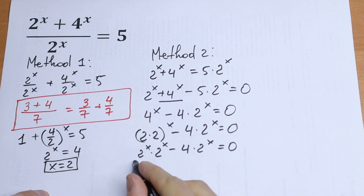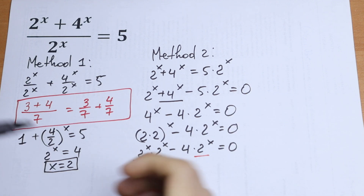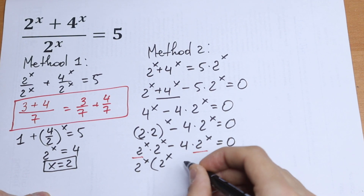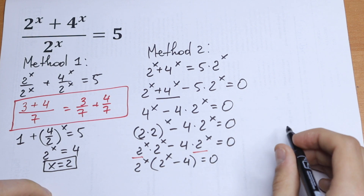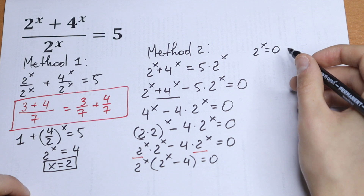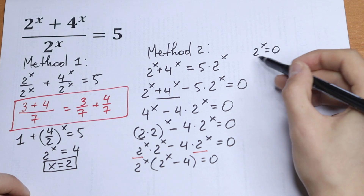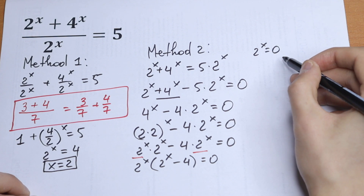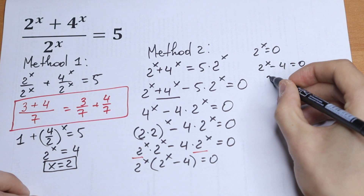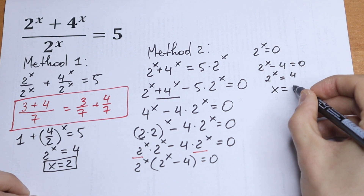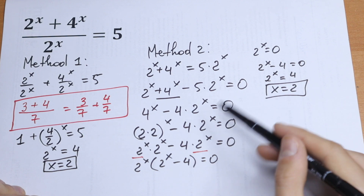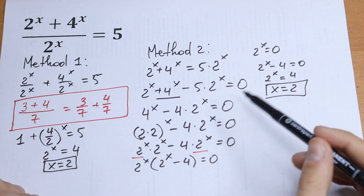We have 2 to the power x appearing twice, so we factor it out as a common factor. We get 2 to the power x times (2 to the power x minus 4) equal to 0. Since it's a product, the first case — 2 to the power x equal to 0 — has no solution, because 2 to the power x can never be zero. The second case: 2 to the power x minus 4 equal to 0, so 2 to the power x equals 4, and x equals 2. The second method is a bit longer and requires knowing more power properties.